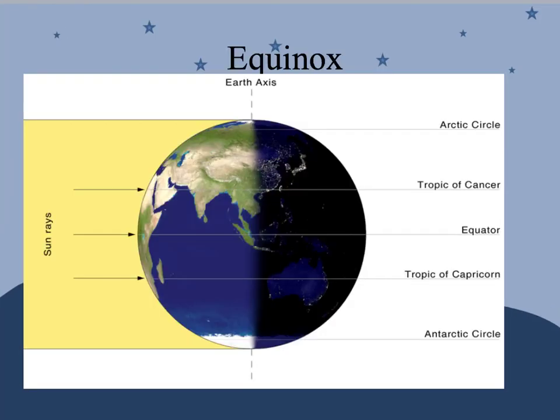Here's your equinox picture. We have the sun's rays directly striking the equator, and you can see it's equal — equal hours of daylight and nighttime all over.